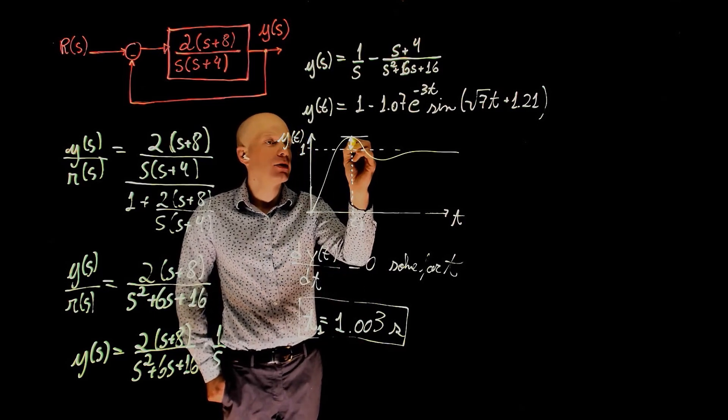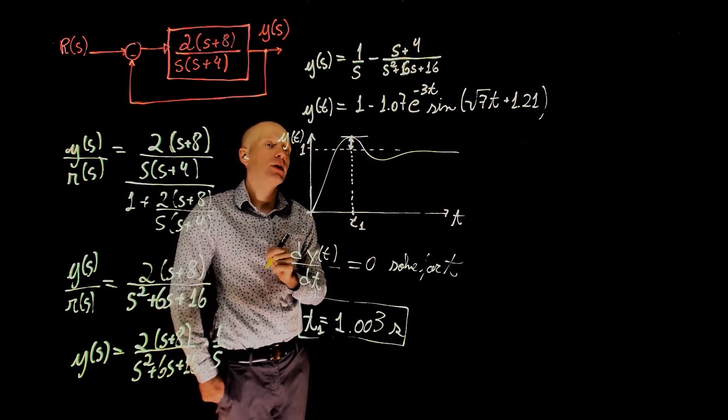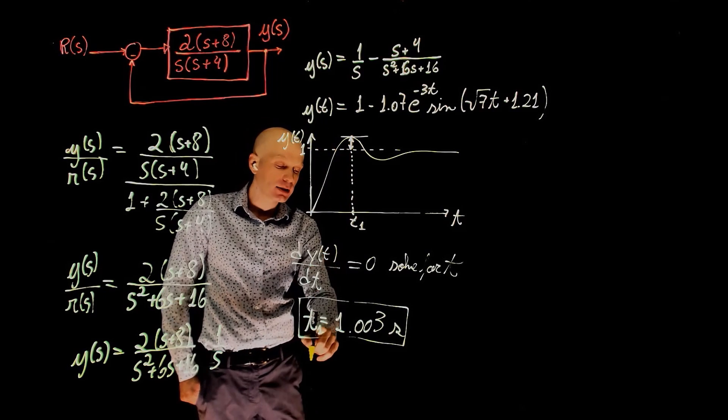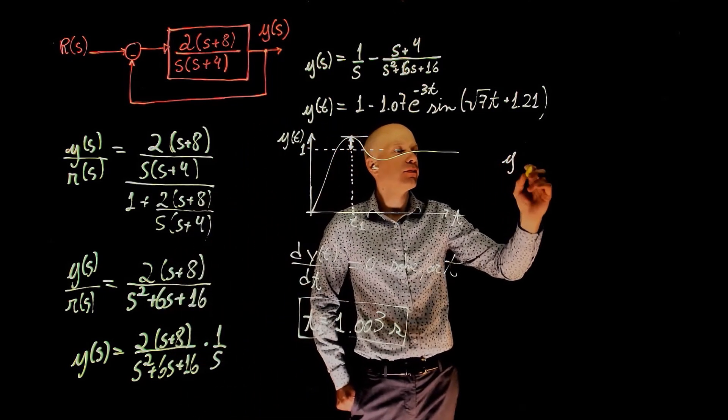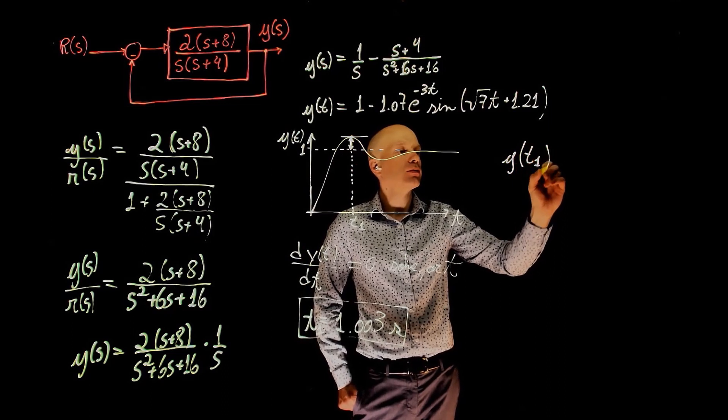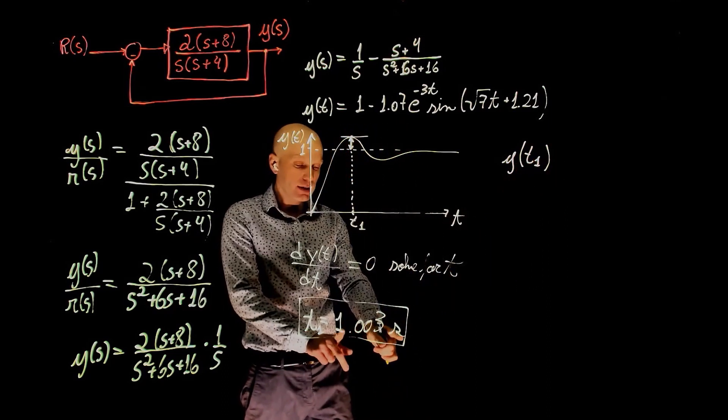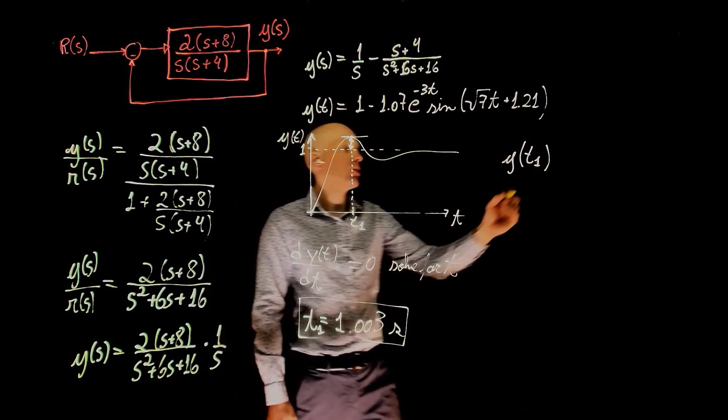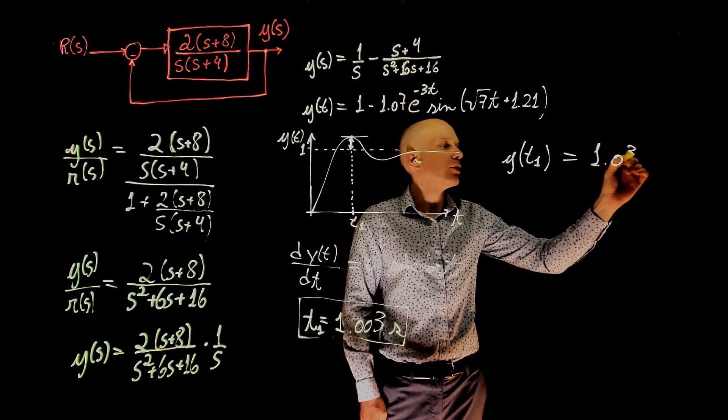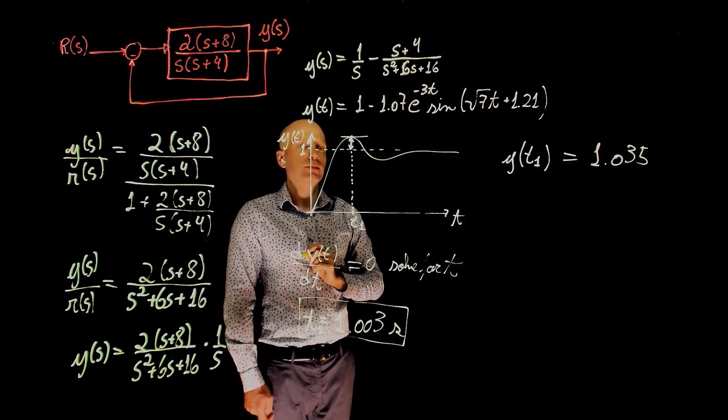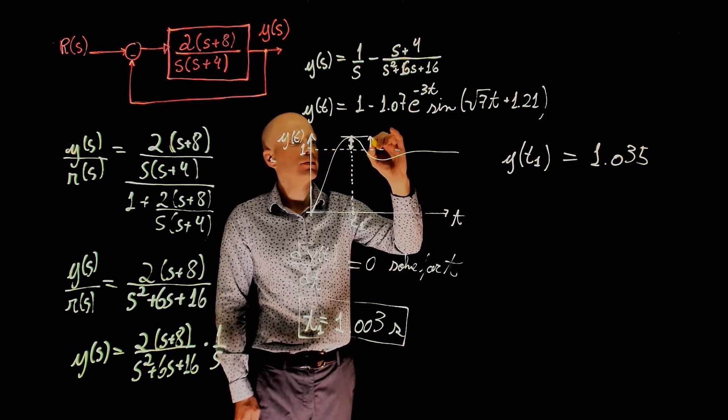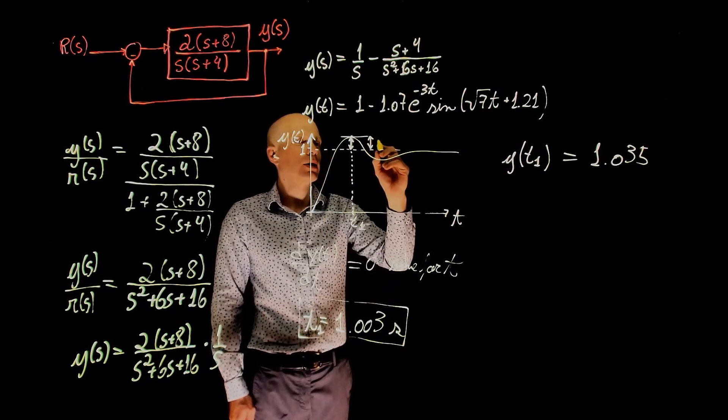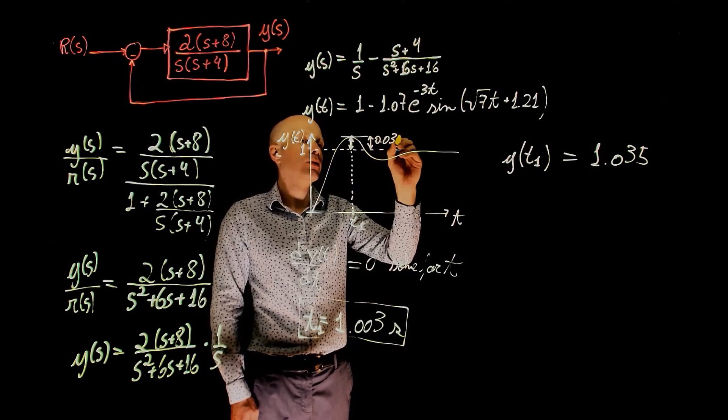This is not the maximum value here. This is the time when the maximum value occurs. Now, to find this maximum value, simply evaluate y of t at t1. So y of t at t1, we can find by simply replacing 1.003 as t here, and calculating the results. And that will be 1.035. So this overshoot here, this difference, is 1.035 minus 1. It's 0.035.